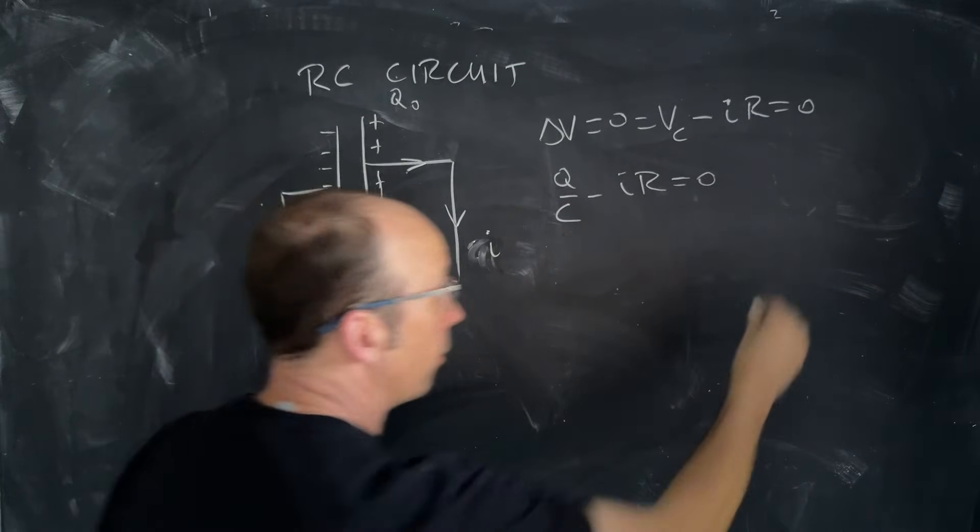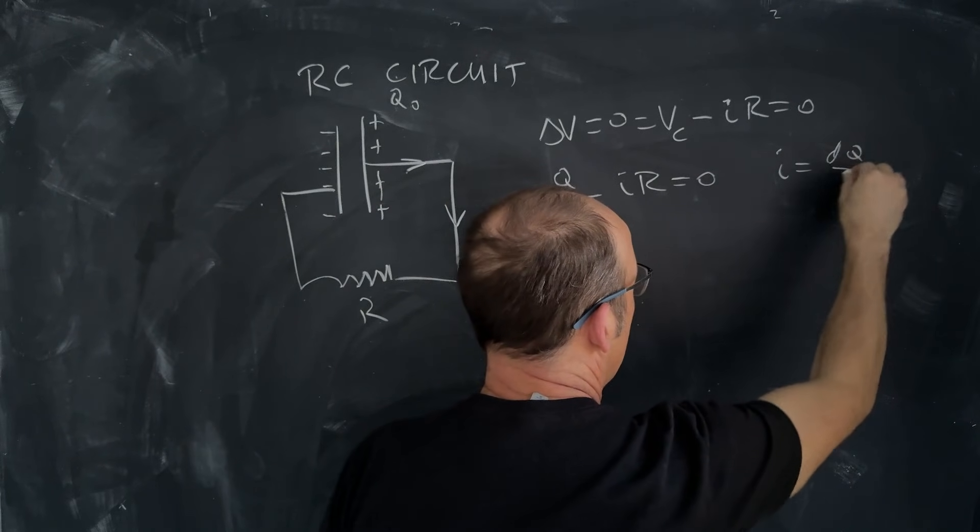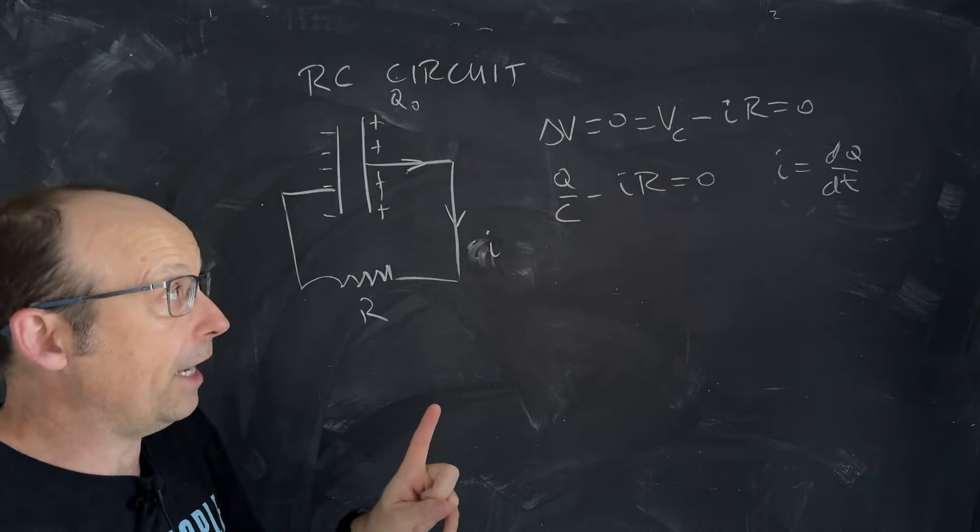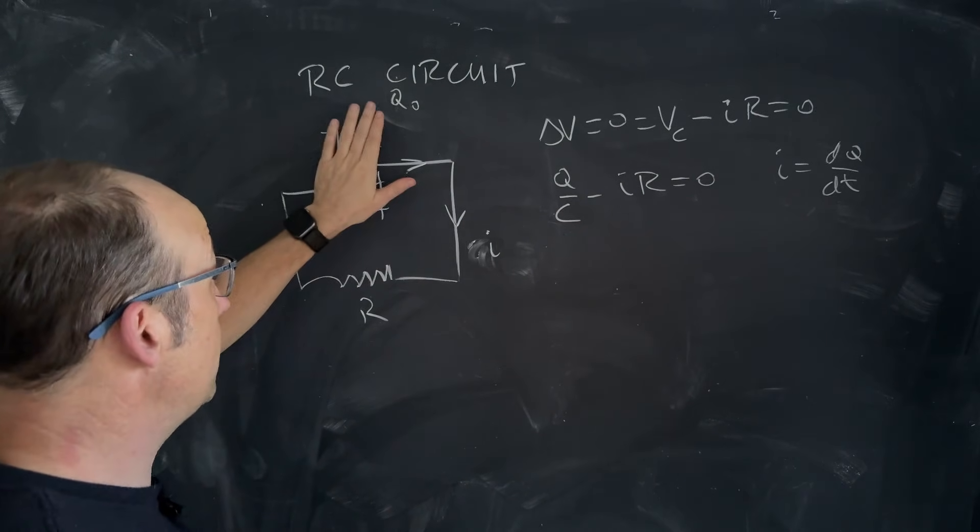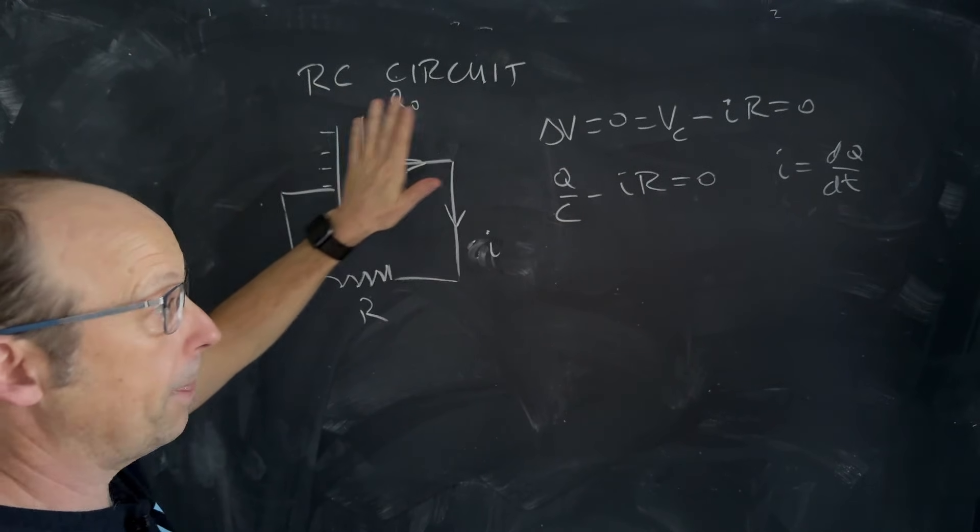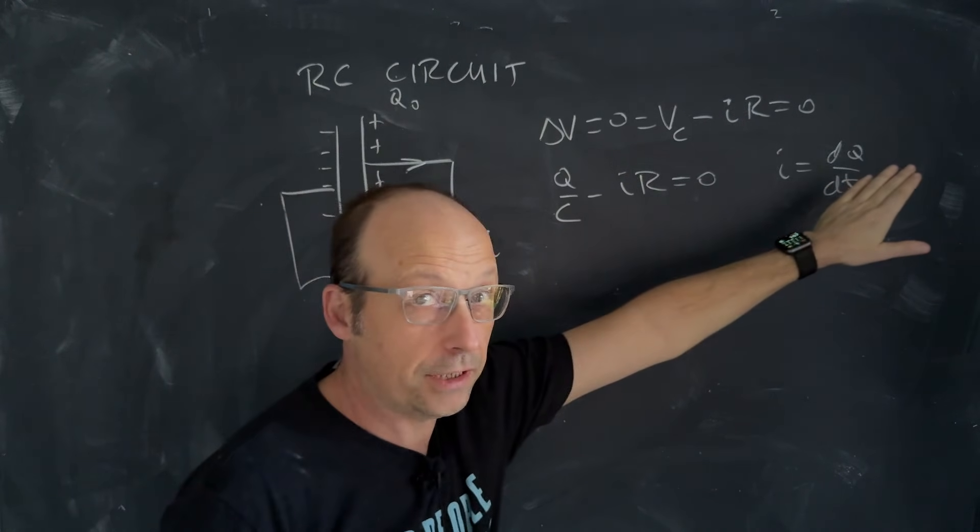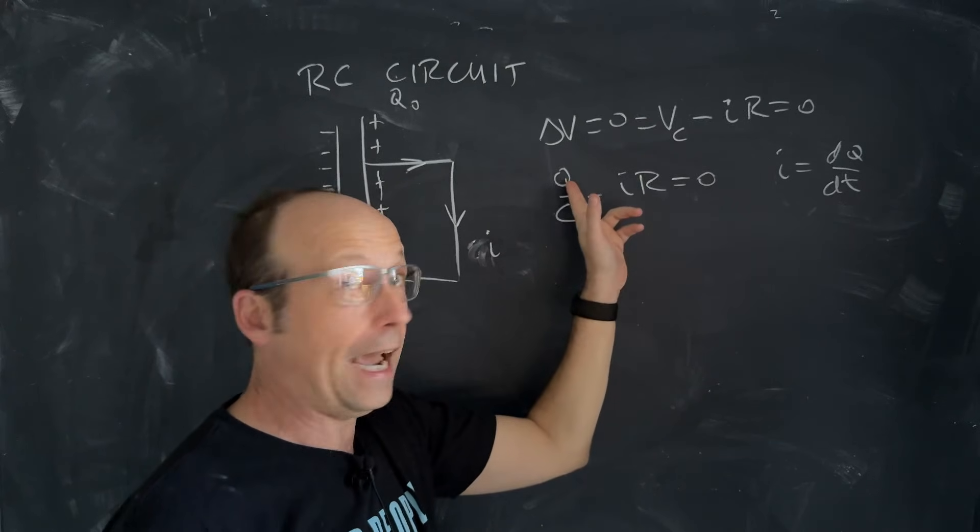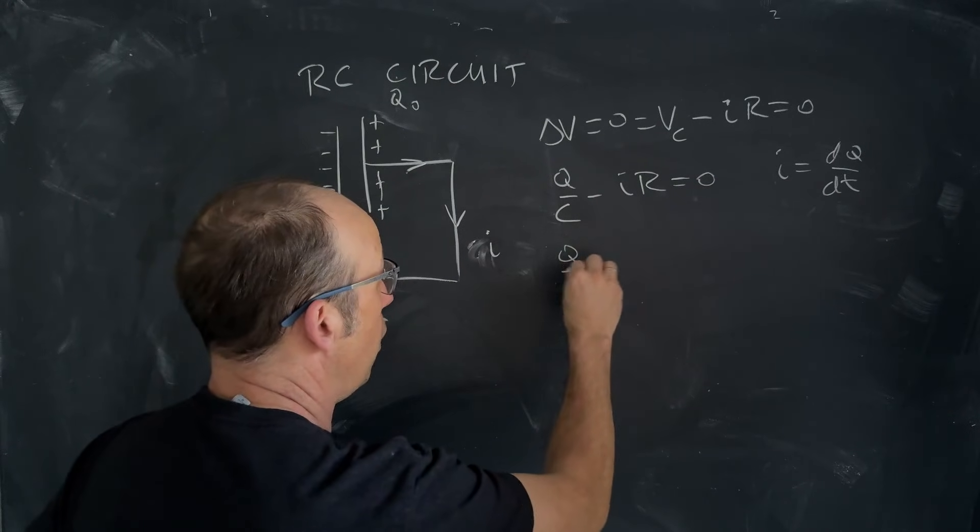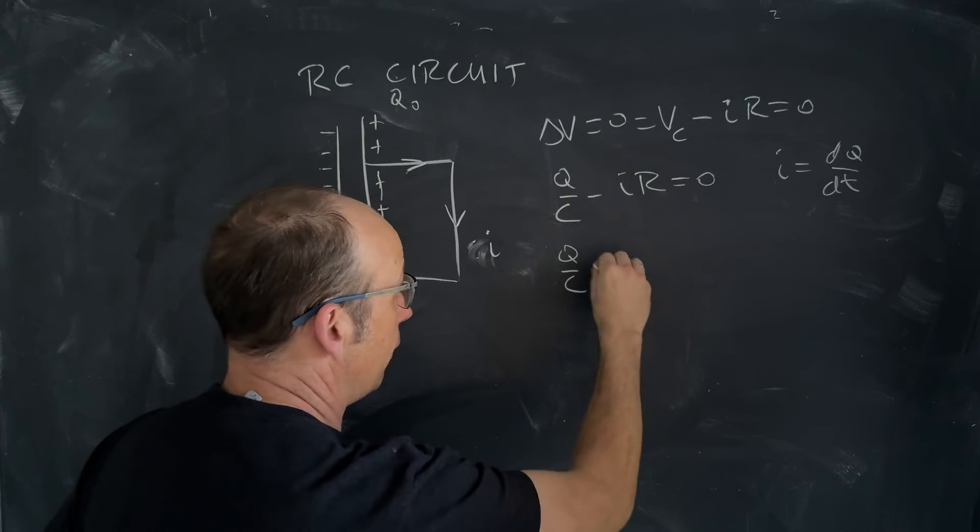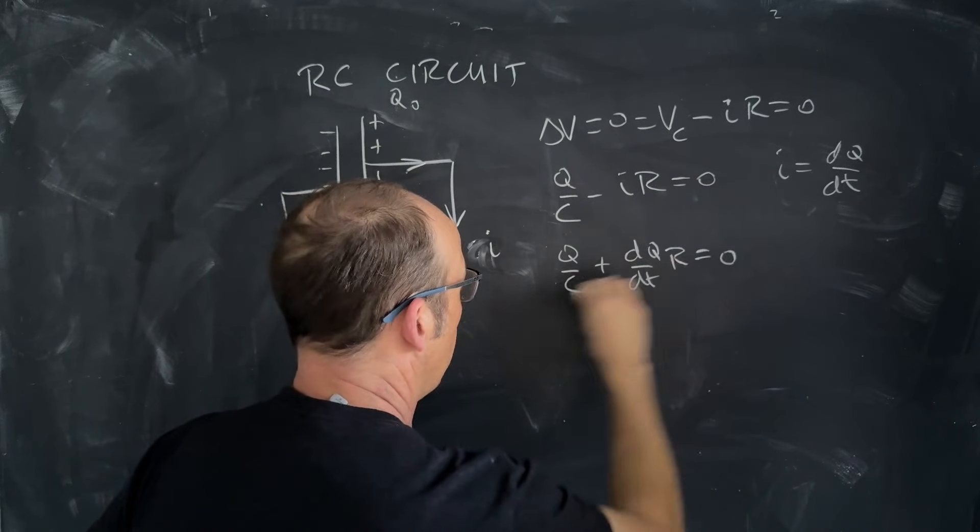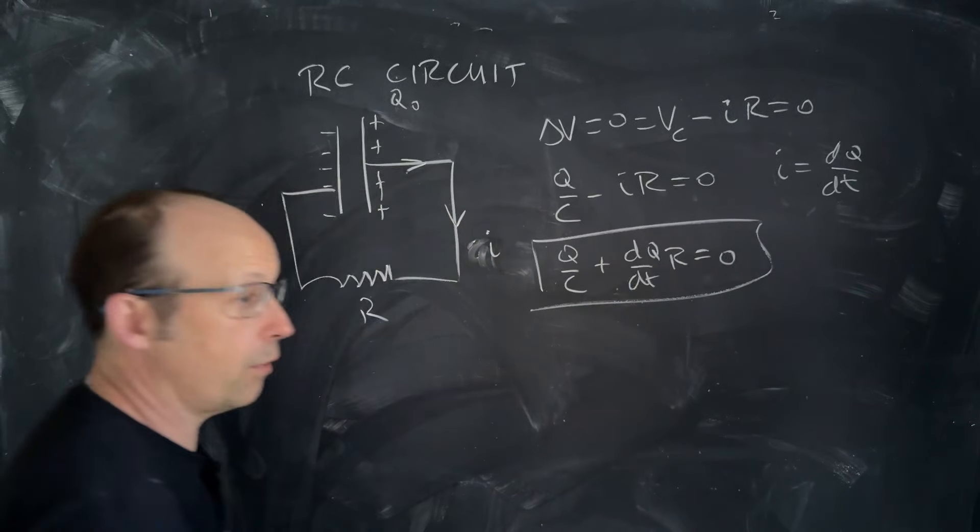However, the voltage across the capacitor depends on the charge, and the charge is leaving because there's a current. So I can say the voltage across the capacitor is Q over C, where C is the capacitance, minus ir equals zero. But remember, I is dQ dt. It's the flow rate of charge. If I want to put that in for I, I actually have to do something. Because this is the charge, Q is the charge on the plate, but it's decreasing. So I'm going to have to make this negative. So I get Q over C plus dQ dt r equals zero. And this is the differential equation that we want to solve.